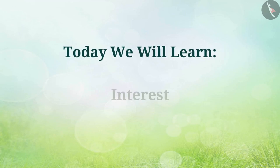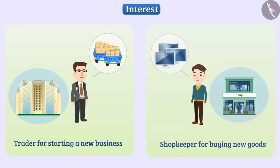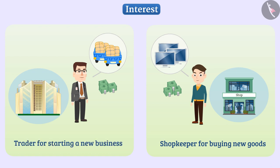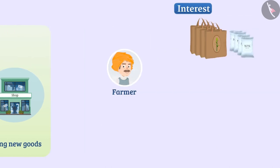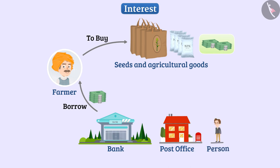Today we are going to learn about interest. There are many situations when we need more money than we have. For example, a trader not having enough money for starting a new business, a shopkeeper for buying new goods, a farmer to buy new seeds and agricultural goods. In such a situation, they borrow money from an institution like a bank, post office, or any person.